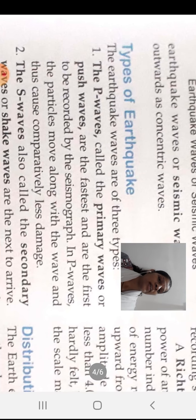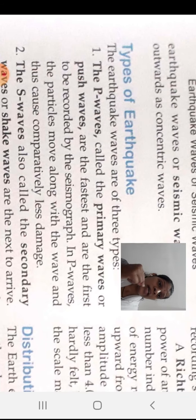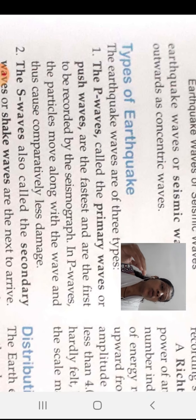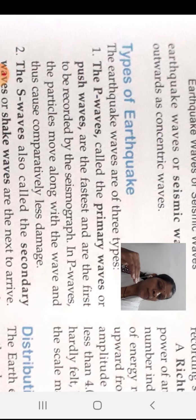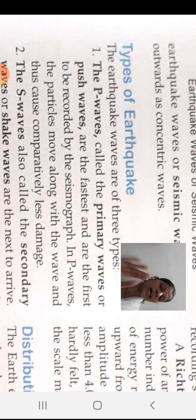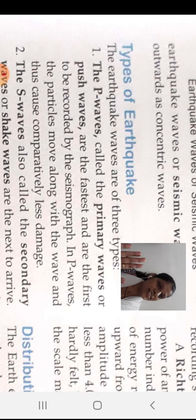In P waves, particles move along with the wave, and they cause comparatively less damage. Their measurement is typically around three to four points — they are small, so not much damage is caused to property. You can only feel them; they do not cause destruction. P waves: primary, low damage.